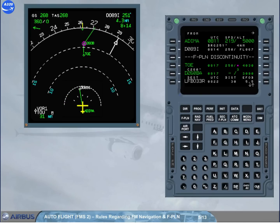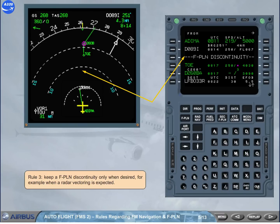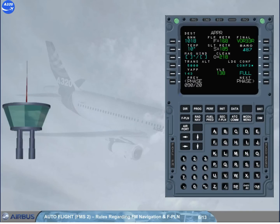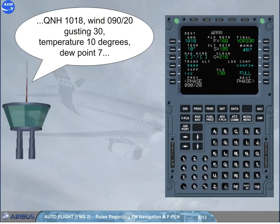Rule 3: Keep a flight plan discontinuity only when desired, for example when a radar vectoring is expected. Rule 4: Anticipate your actions on the MCDU — fly ahead of the aircraft. Whenever useful information is known, such as ATIS on ground, an alternative clearance is expected, or a circling is planned, insert it in the MCDU as soon as time allows it.